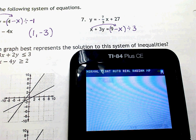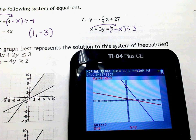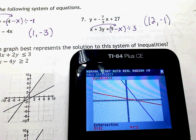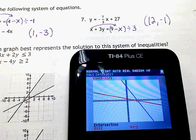Alright. Second trace 5, enter, enter, enter. So we get 12 comma negative 1. So 12 comma negative 1. Make sure, again, you put that in parentheses because it is the ordered pair where they intersect.